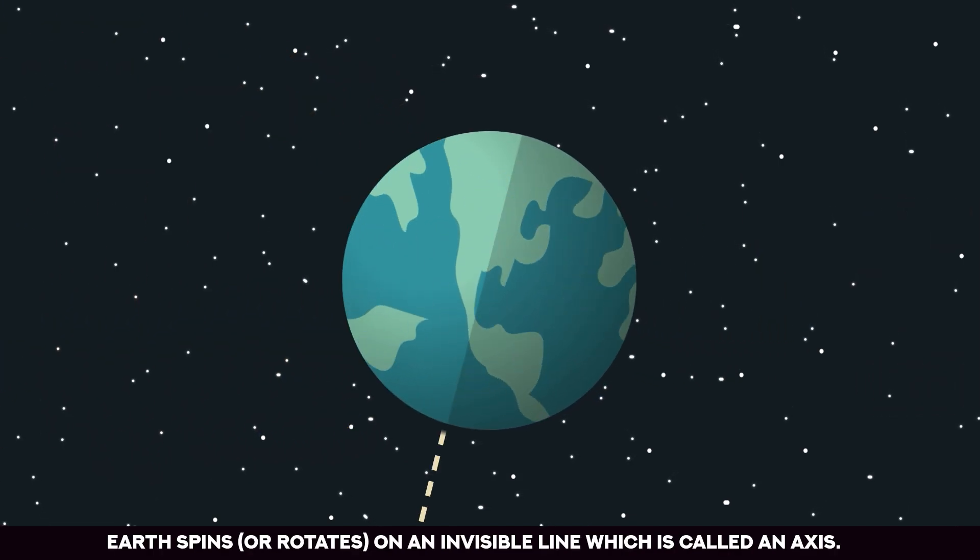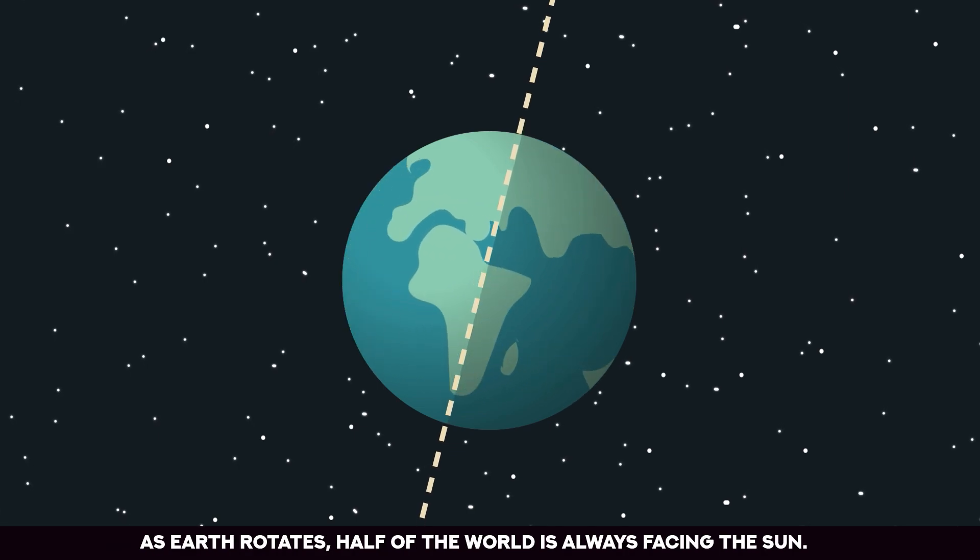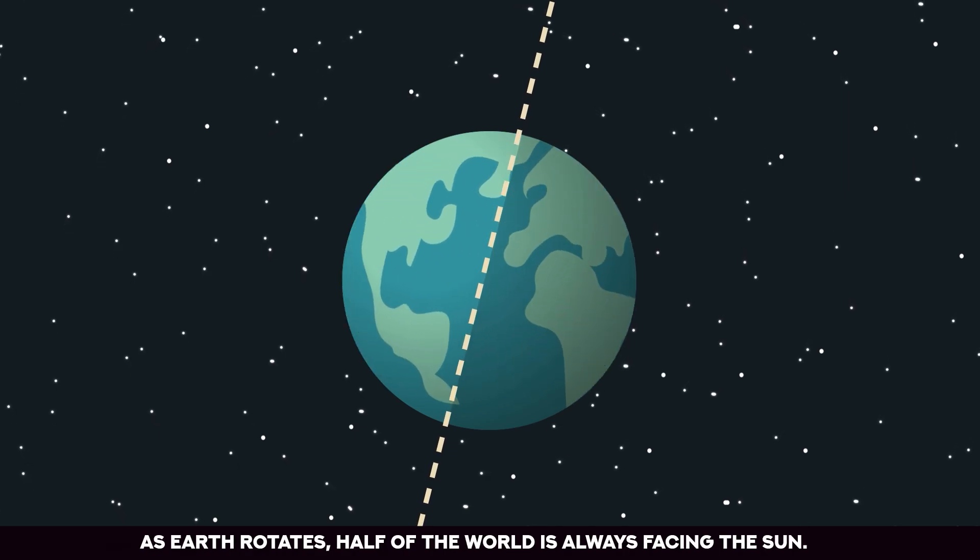Earth spins, or rotates, on an invisible line which is called an axis. As Earth rotates, half of the world is always facing the Sun.